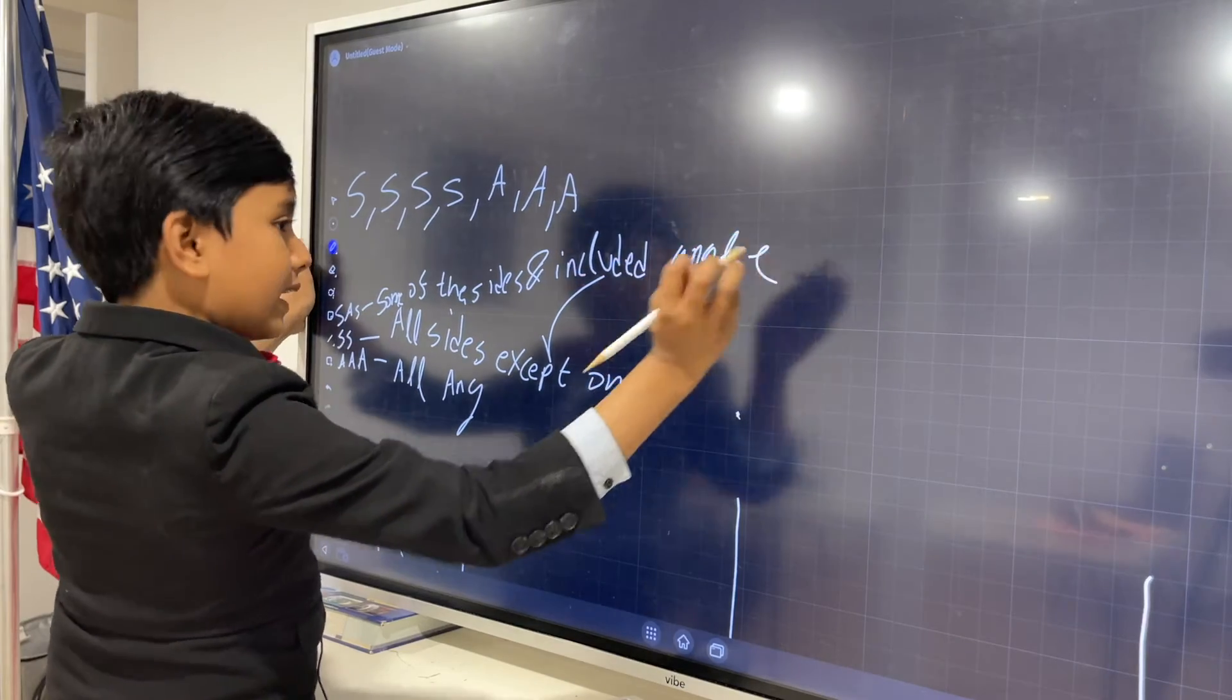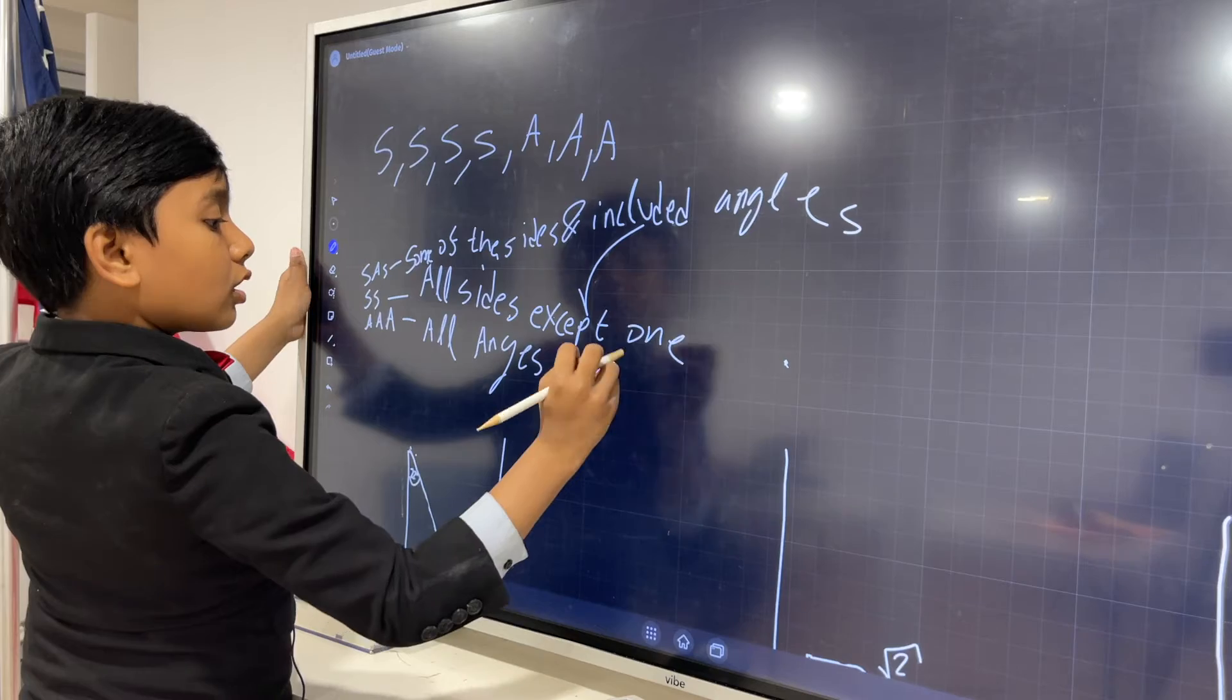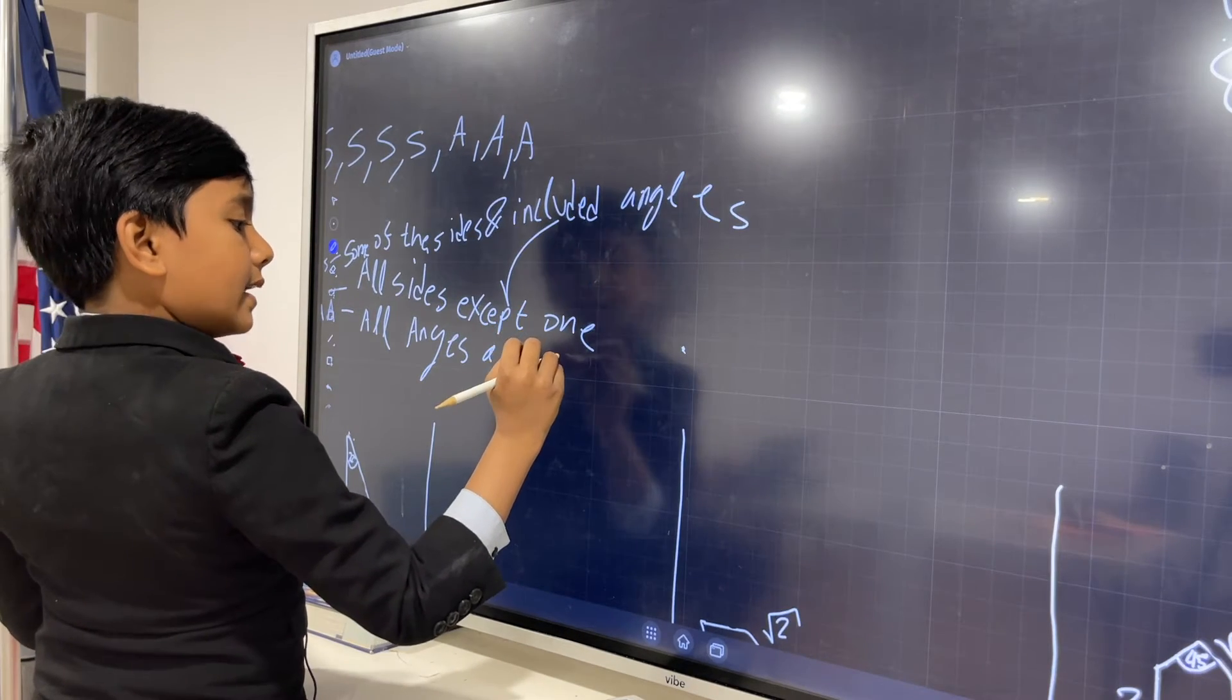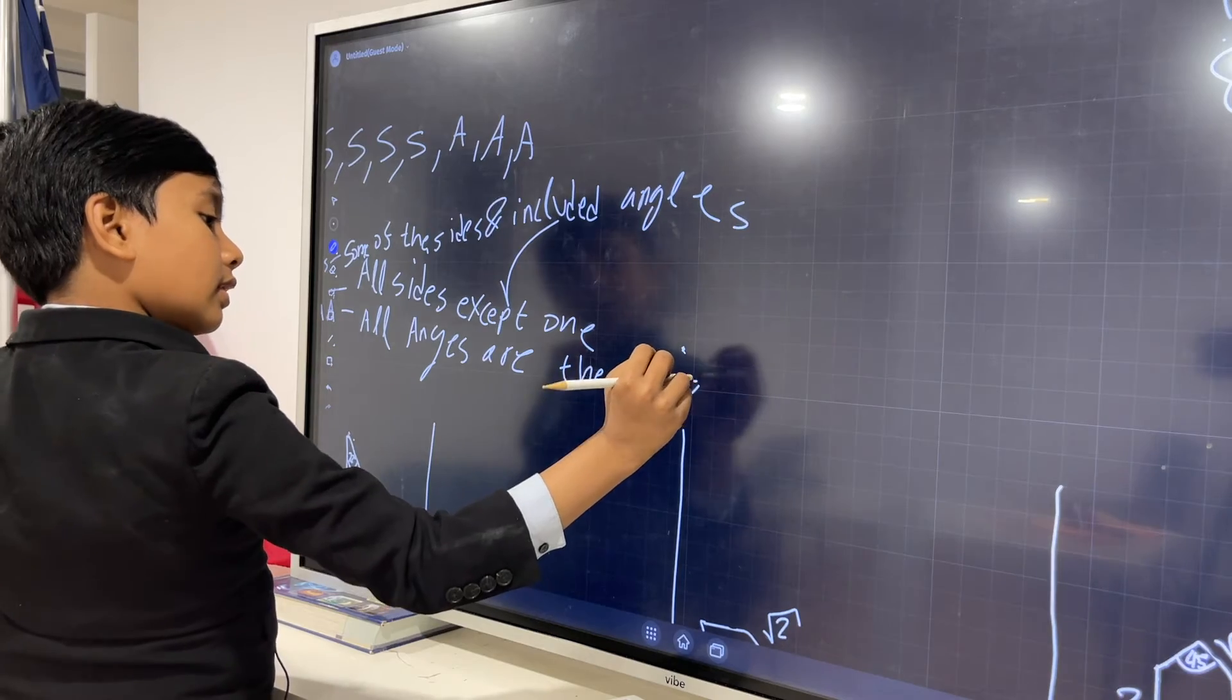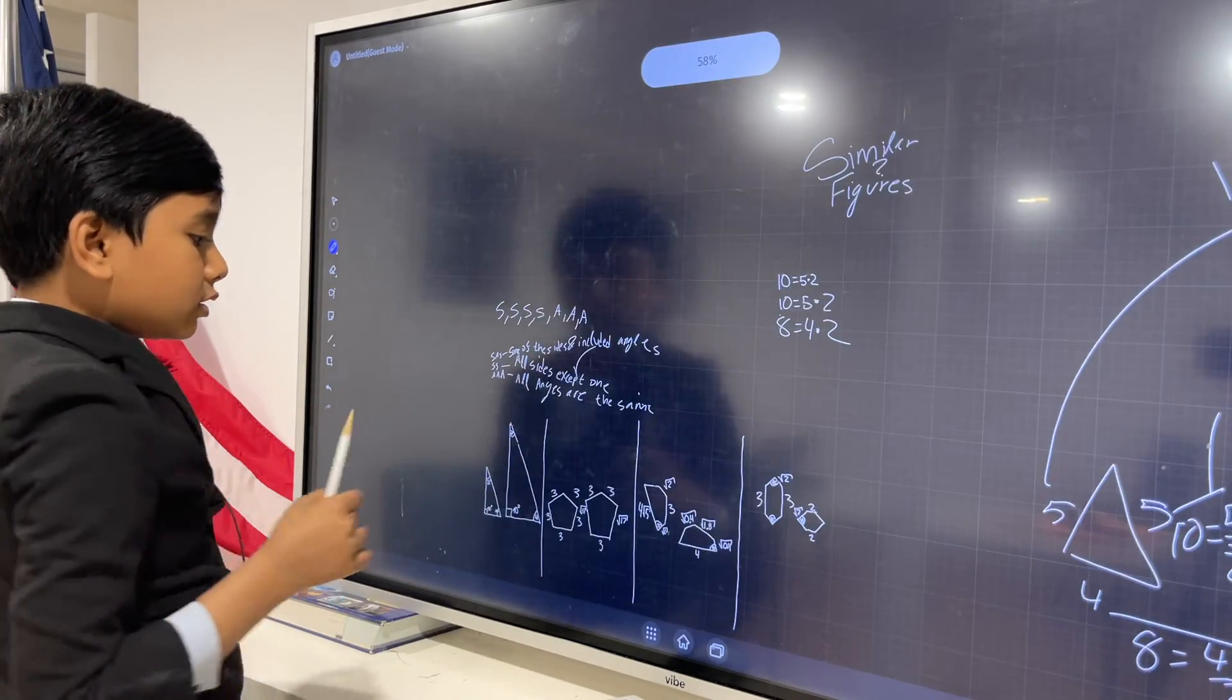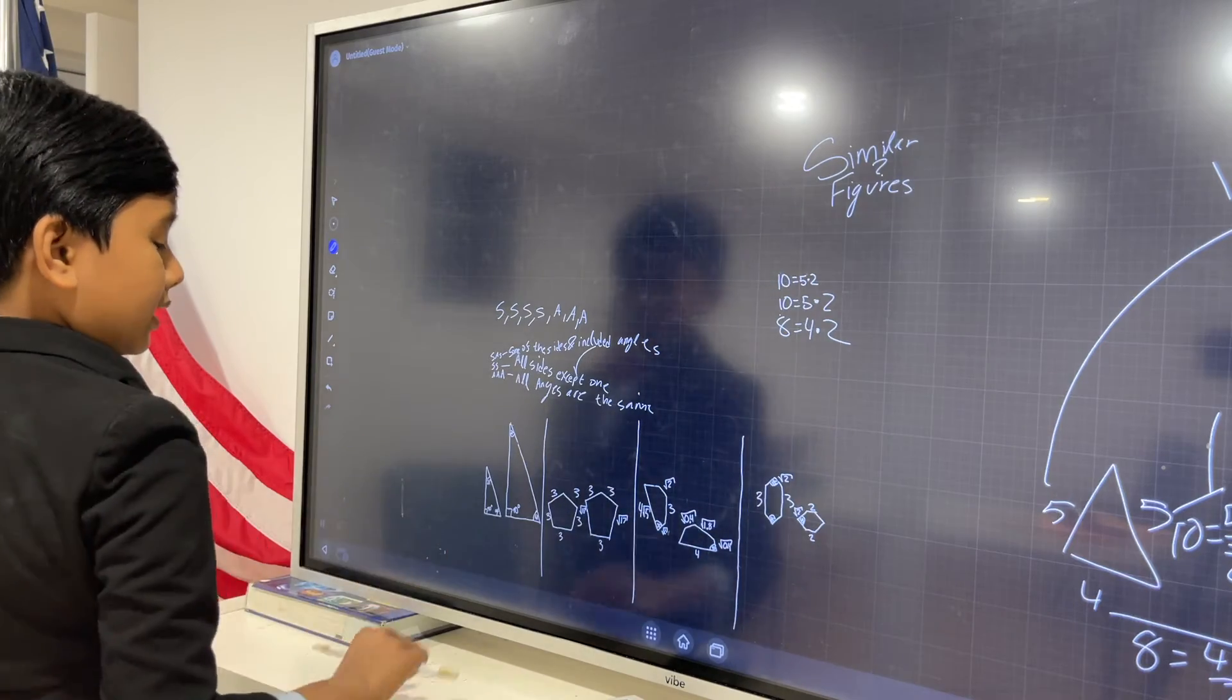So they give you all side lengths except one. Side-angle-side is all, wait, some of the sides and included angles. And AAA means all angles are just the same. Which means that since if all angles are the same, then you can scale one down and it'll be equal to the other.